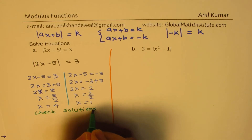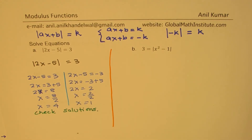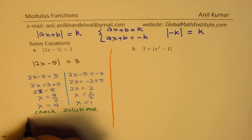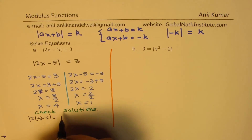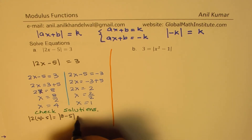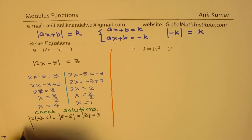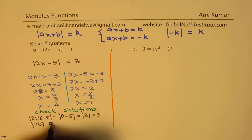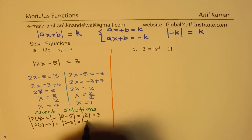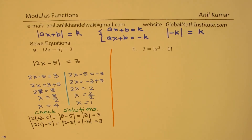Checking x equals 4: the absolute value of 2 times 4 minus 5 equals the absolute value of 3, which equals 3. Checking x equals 1: the absolute value of 2 times 1 minus 5 equals the absolute value of minus 3, which is also 3. Both values work out correctly — that confirms our strategy is correct.